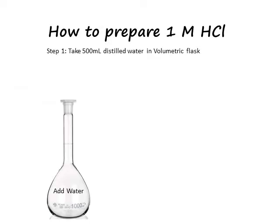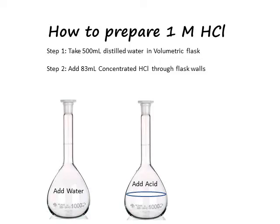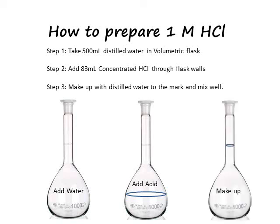It is very important to add water into the volumetric flask before adding acid. As a first step, add 500 ml of water. In the next step, transfer the concentrated hydrochloric acid through the walls carefully. Finally, make up the solution with distilled water and shake the solution very well before further use.